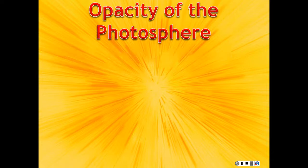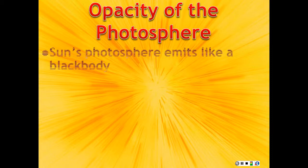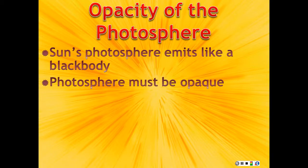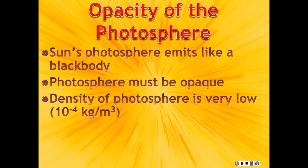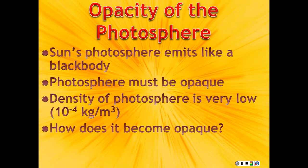Now, what is it gives rise to this opacity? So, you have to have a mechanism by which you're doing this absorbing. The sun's photosphere behaves like a black body, and it must be opaque, but it's very low density. So, it has to be something that's giving rise to a high opacity in order to overcome the fact that it's low density. How does it become opaque?